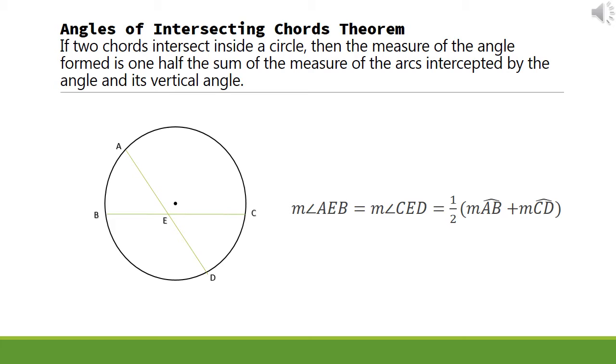Thus, one-half the sum of the measures of arc AB and arc CD is equal to the measure of angle AEB and its vertical angle, angle CED.